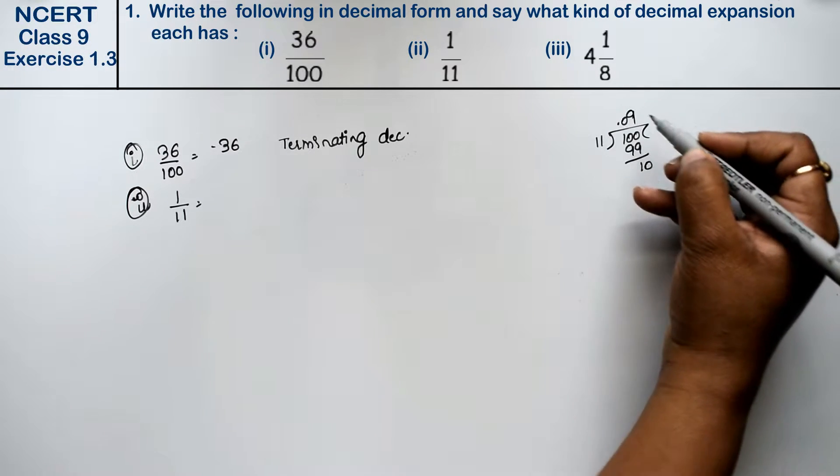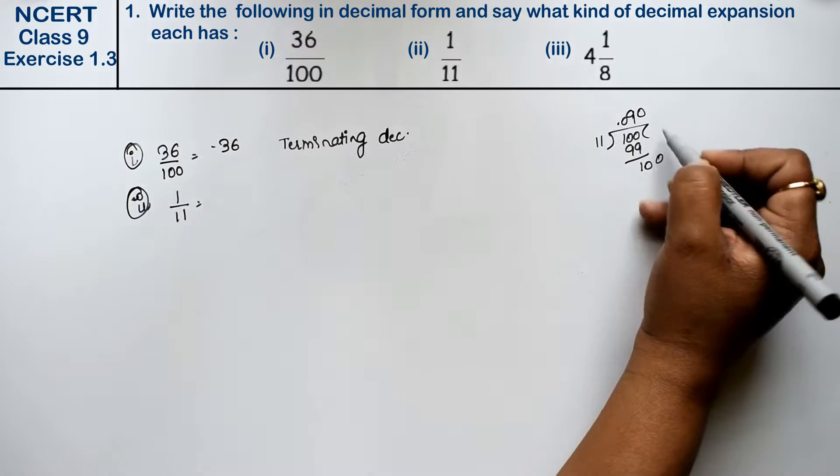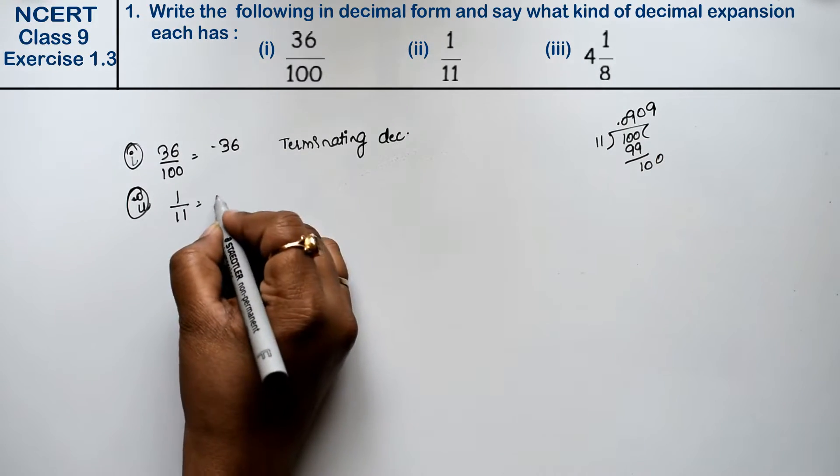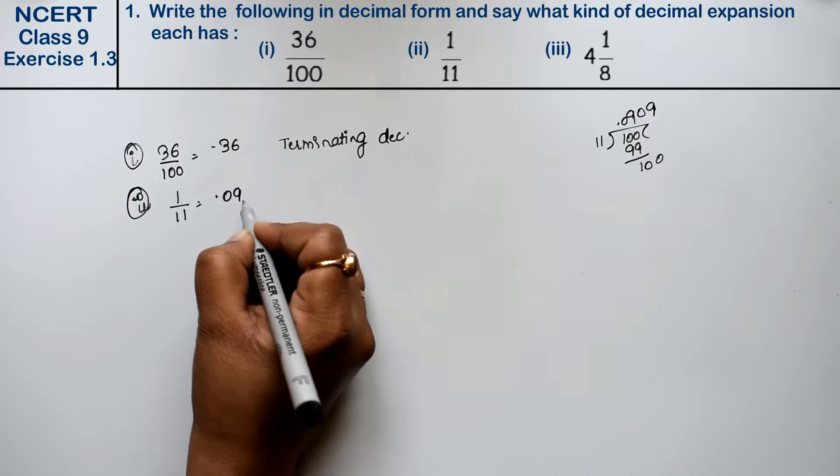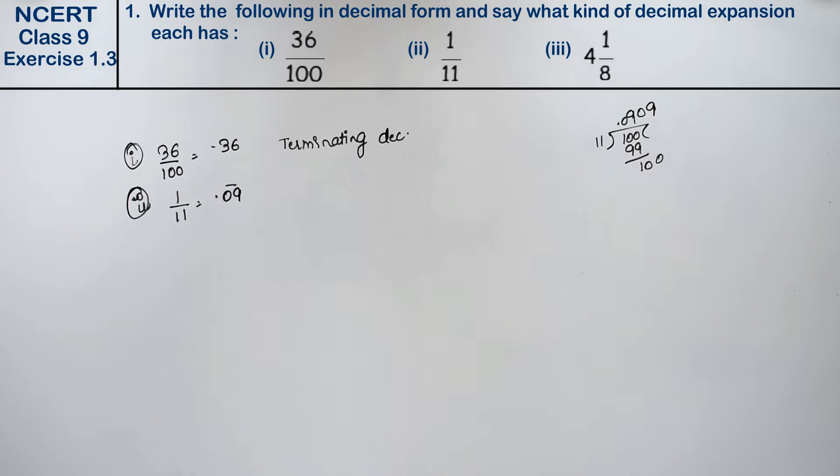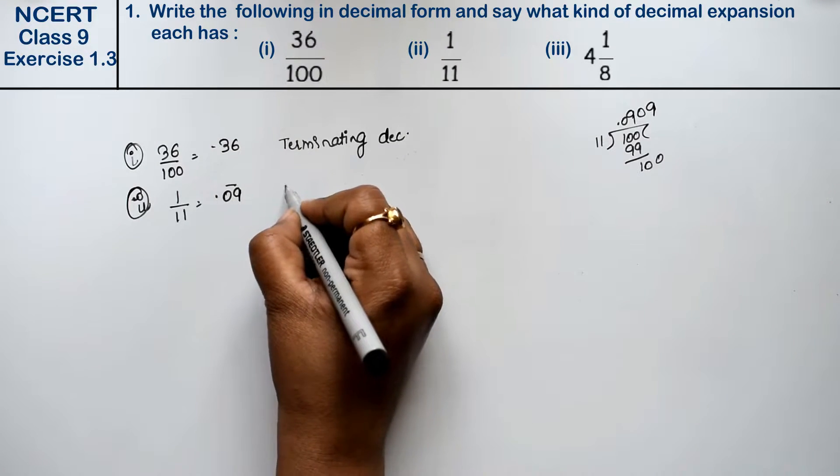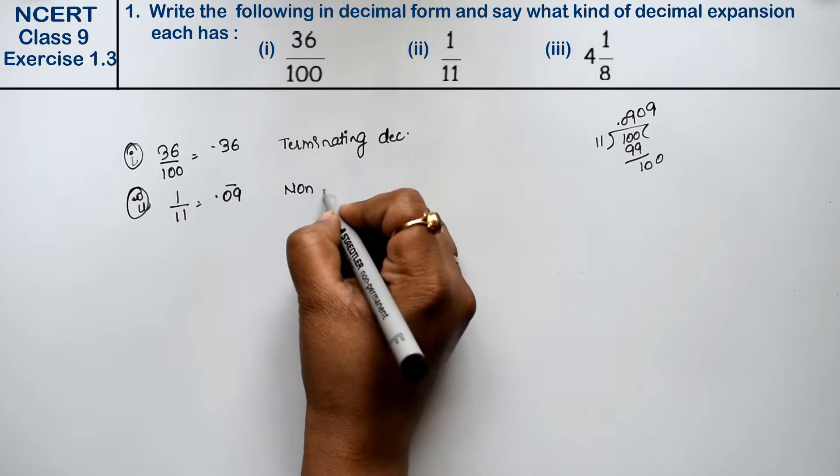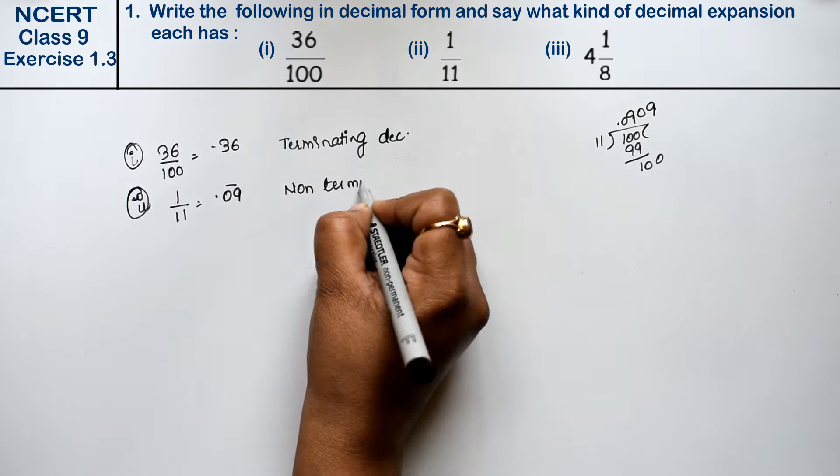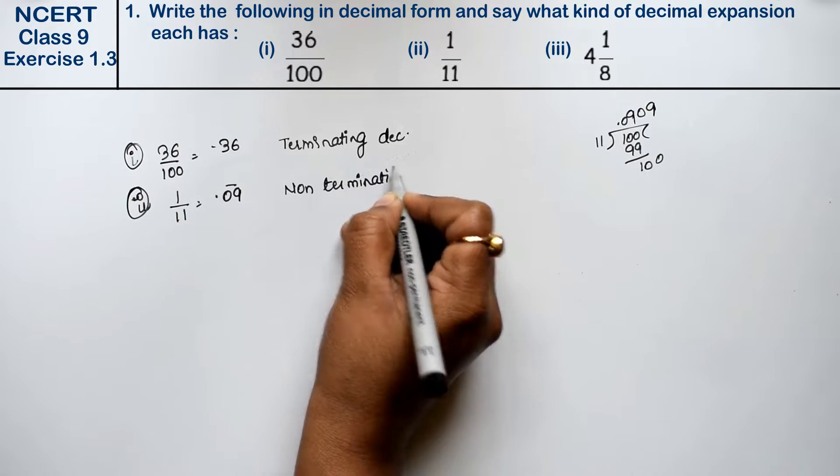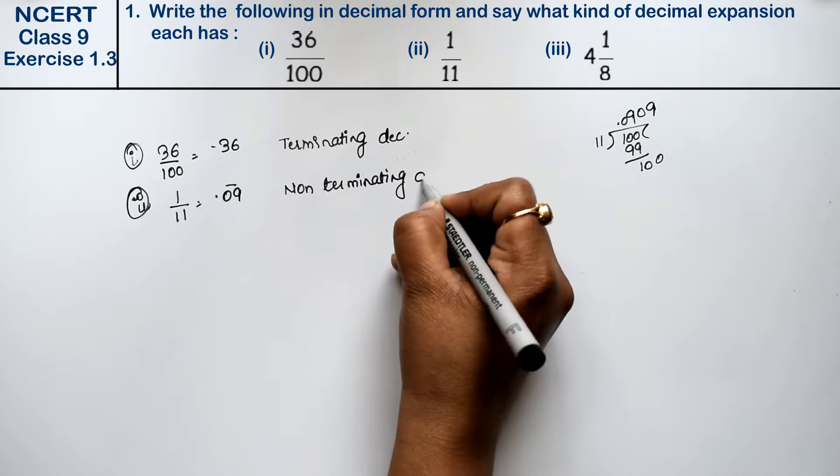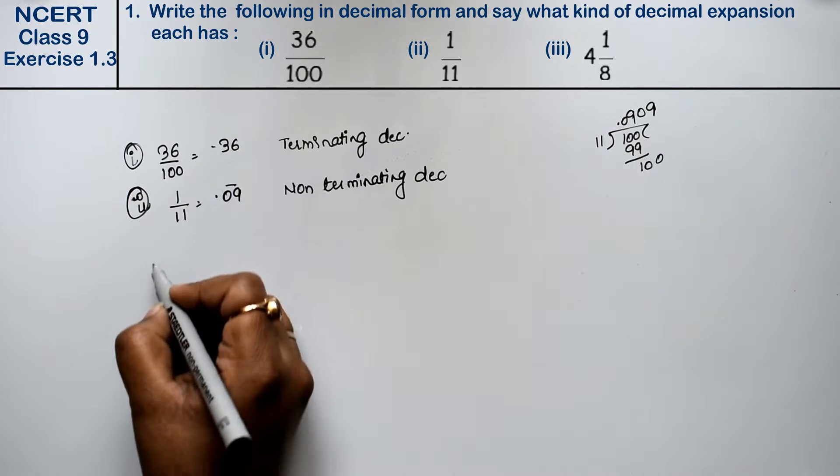Then 1 is 0 automatically. Then 1 is 0. Then 1 is 0. 9 continues. So this answer is 0.09 bar. So what is the form of the bar? Non-terminating. Because it's not stopped. That means it's a non-terminating decimal. Right friends.